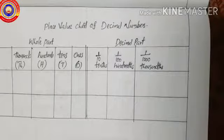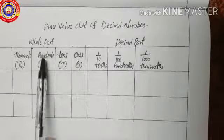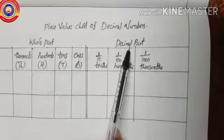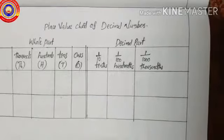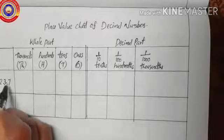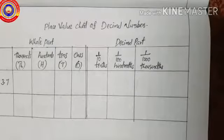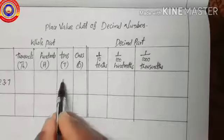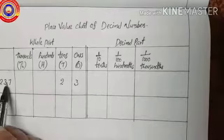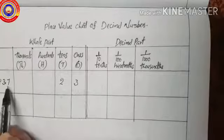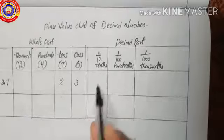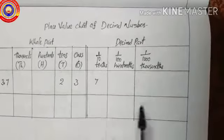Next we shall learn the place value chart of decimal numbers. Decimal numbers have two parts: the whole part and the decimal part. For example, 23.7 — here 23 is the whole part with 2 in the tens place and 3 in the ones place. The point 7 means 7 is in the one-by-tenth place.